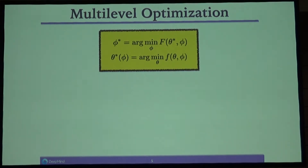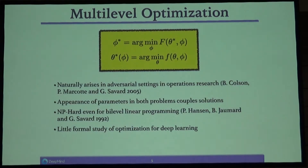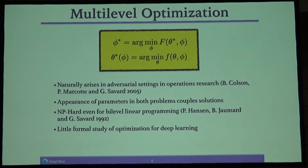This can be seen as a particular case of multi-level optimization, which is a very general framework not explored very much in deep learning, though there's a lot of work on it in operations research. For example, the top-level objective F might be the revenue generated by a network of toll booths, and the lower-level objective f is the cost to an individual driver trying to minimize how much they spend on tolls. This is naturally adversarial: the driver wants to spend as little money as possible, while whoever designs the highway system wants to extract as much revenue as possible.